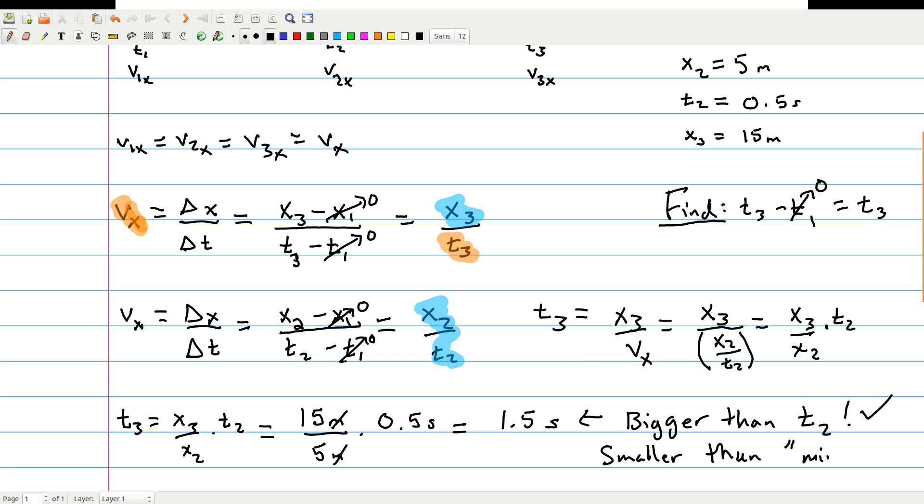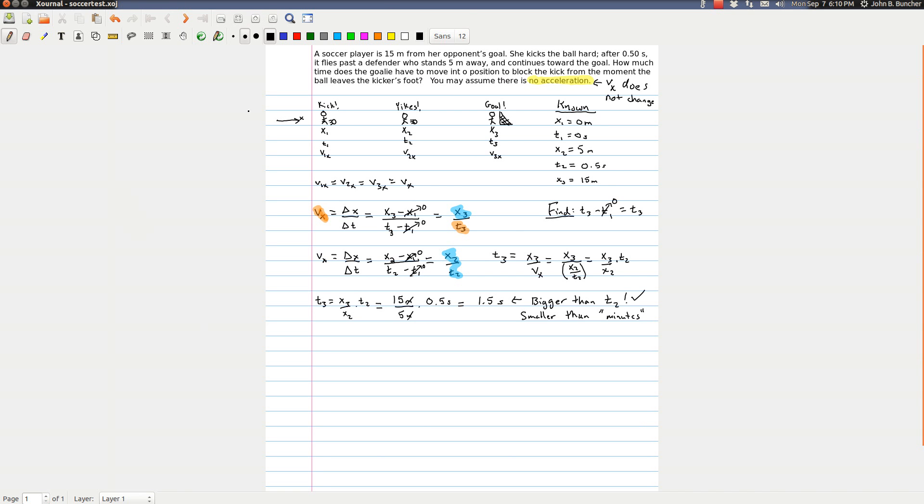Alright so that's one thing that we're not crazy and also it's smaller than minutes, right we wouldn't expect the soccer ball to take minutes to get to the goalie so it's good that our answer isn't that large. And that's a pretty good check to make sure that your answers aren't crazy. It's hard to be precise with those but you can typically compare it to other numbers in the question like we just did with comparing it to the half a second. We figured our t3 should be bigger than half a second and it certainly was. Okay so that is the full solution to that particular question. If you have any questions by all means let me know and I hope this was helpful.